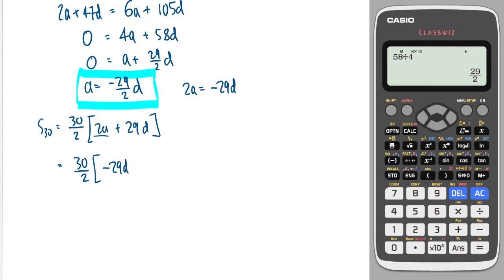So I get minus 29d plus 29d in there. And of course, minus 29d plus 29d is 0. So we're doing 30 over 2, which is 15, times by 0. Which is going to give me 0. So my final answer is 0.